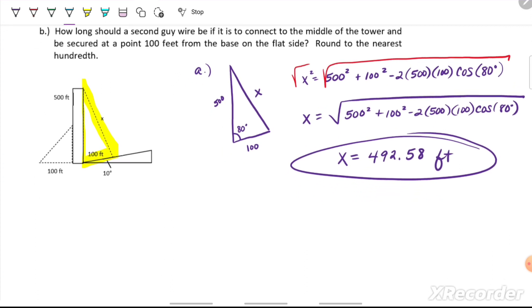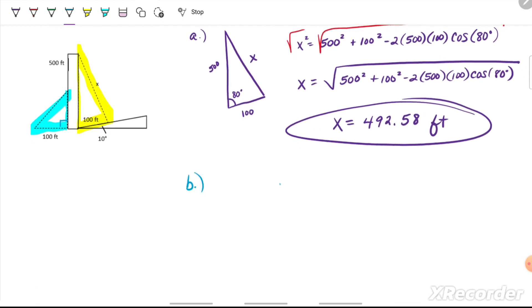Let's move on to part B. We're looking on the other side here. We're trying to figure out how long the guy wire would be if we're connecting at the middle of the tower, and this is flat ground, so we will have a 90 degree angle here. I'm going to draw another breakout triangle. We're looking for the length of the wire. We know that the base distance is 100, and since this wire is attaching halfway up our tower, this side is going to be 250.